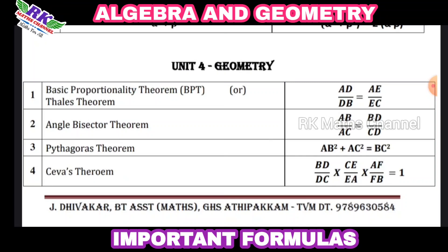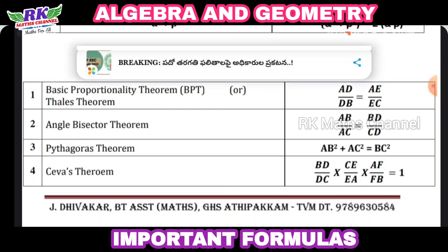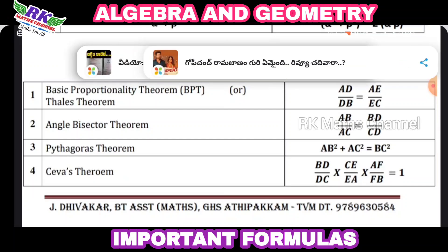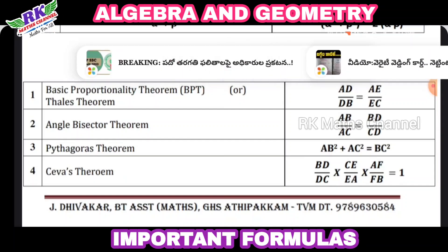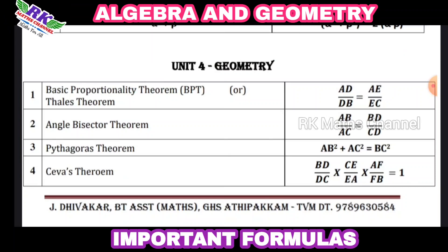Now, the angle bisector theorem: AB by AC is equal to BD by CD. We have already done videos on this — you can find them in the previous playlist.